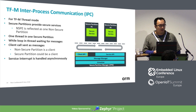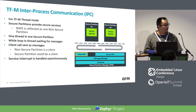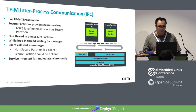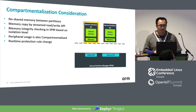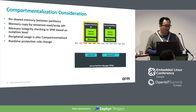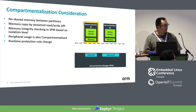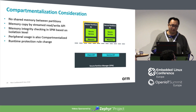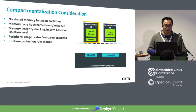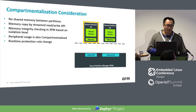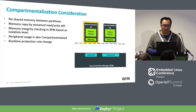A client can be a non-secure partition or even a secure partition, since some secure partitions need to request services from other secure partitions. Interrupt handling required by the secure partition is handled synchronously in thread mode — this is a key difference from library mode. From a compartmentalization standpoint in thread mode, there is no shared memory between partitions; memory is copied via a stream API. During the copying process, memory is checked for integrity to ensure it belongs to the corresponding secure partition.